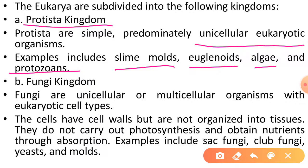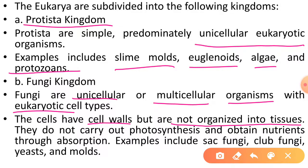Doosra kingdom Fungi kingdom aayega. Fungi unicellular aur multicellular dono prakar ki milegi aur eukaryotic cells hongi. The cells have cell walls — Fungi ki cell walls chitin se bani hongi — but are not organized into tissues. They don't carry out photosynthesis aur fungi apna nutrition absorption ke dwara prapt karegi. Examples: sac fungi, club fungi, yeast aur molds.